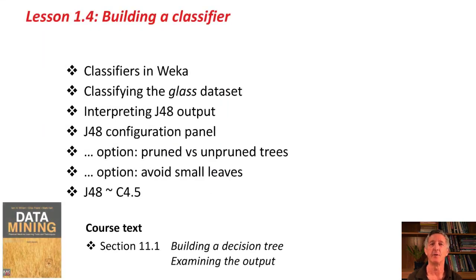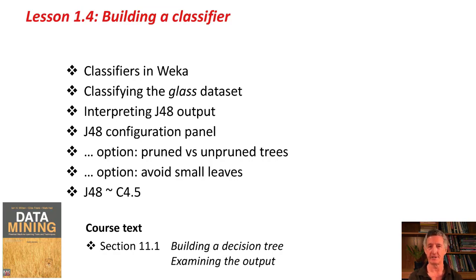We've talked about classifiers in Weka and where to find them. We classified the glass dataset and looked at how to interpret the output from J48, in particular the confusion matrix. We looked at the configuration panel for J48 — a couple of options: pruned versus unpruned trees, and the option to avoid small leaves. I told you how J48 corresponds to the machine learning system most people know as C4.5. You can read about this in the book, section 11.1. Now go and do the activity associated with this lesson. See you again soon!